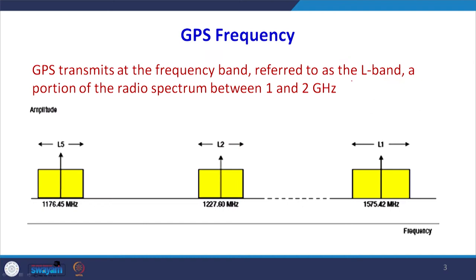These GPS units are also working in different frequencies. They are working in the L-band, and the spectrum is between 1 and 2 gigahertz. There is an L1 frequency, an L2 frequency, and some receivers now are also working in the L5 frequency. The more frequencies a receiver works in, the more costly the receiver is.